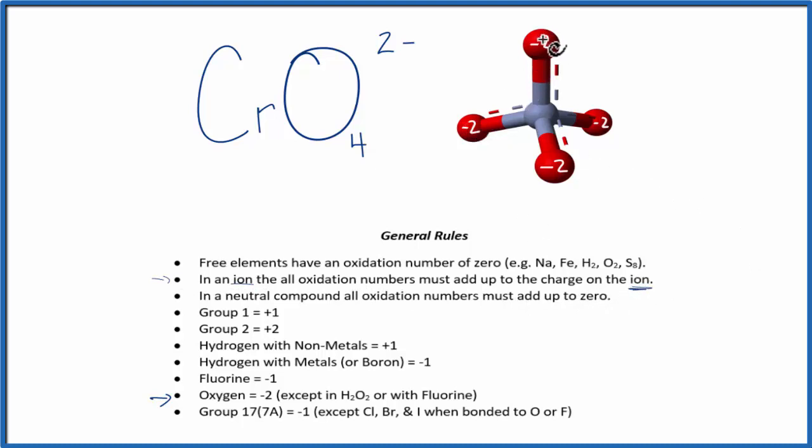So think of it this way, we have minus 2, 4, 6, 8, minus 8, plus some number, and that number, that'll be the oxidation number on the chromium, is going to equal the charge on the ion. So that equals a minus 2.